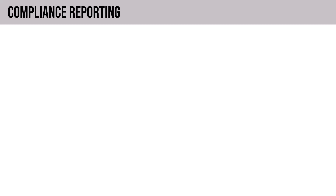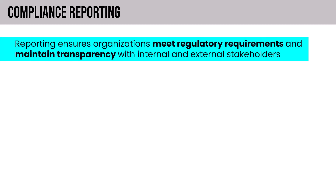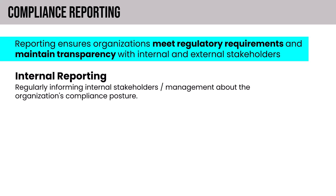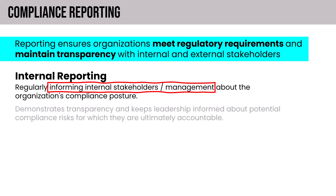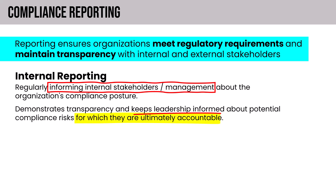Reporting serves a couple of important functions. It ensures organizations meet regulatory requirements, but it also ensures they maintain transparency with internal and external stakeholders. Internal reporting focuses on regularly informing internal stakeholders and management about the organization's compliance posture. It demonstrates transparency and keeps leadership informed about potential compliance risks for which they, as the leaders of the organization, are ultimately accountable — accountability they cannot transfer.